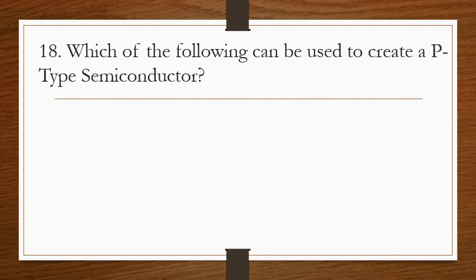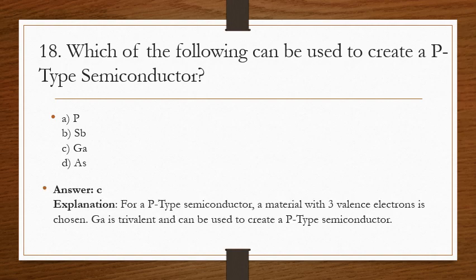Question 18: which of the following can be used to create a P-type semiconductor? The answer is C. For a P-type semiconductor, a material with three valence electrons is chosen. Gallium, being trivalent, can be used to create the P-type semiconductor.